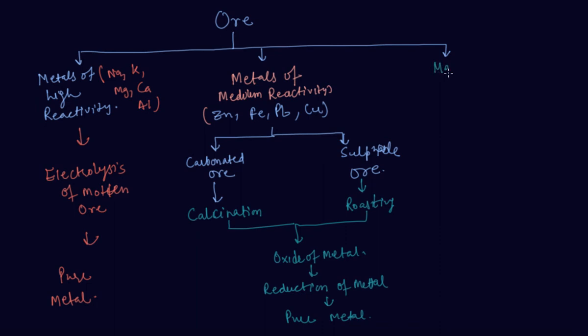Now here are the metals of low reactivity. As we know, gold and silver. They are found in their native states and also in sulphide ores. Then same process as roasting, then metal, then refining.